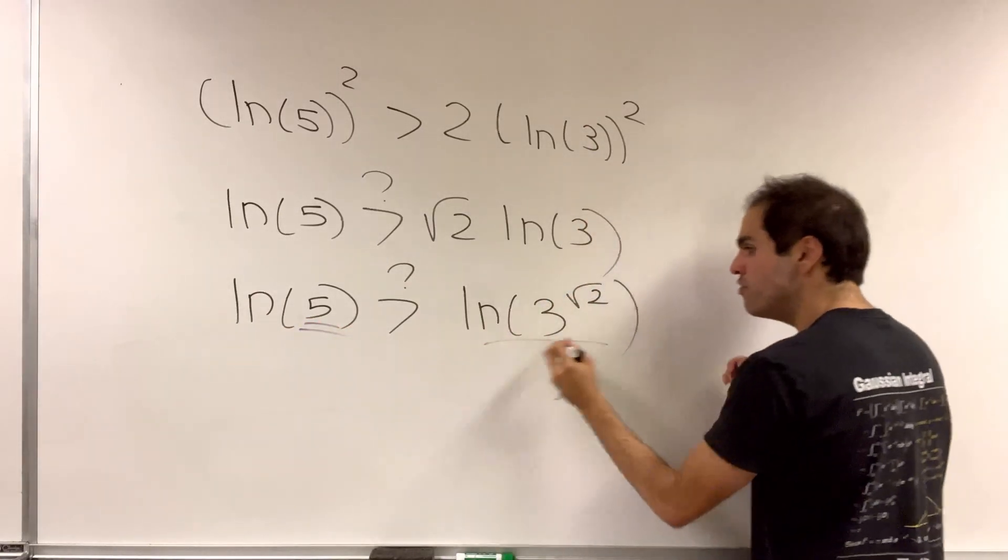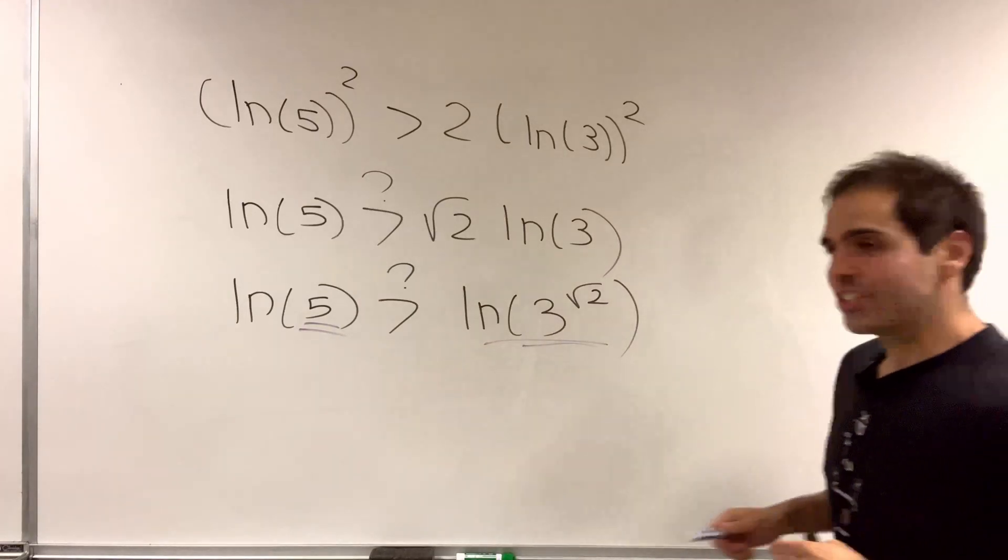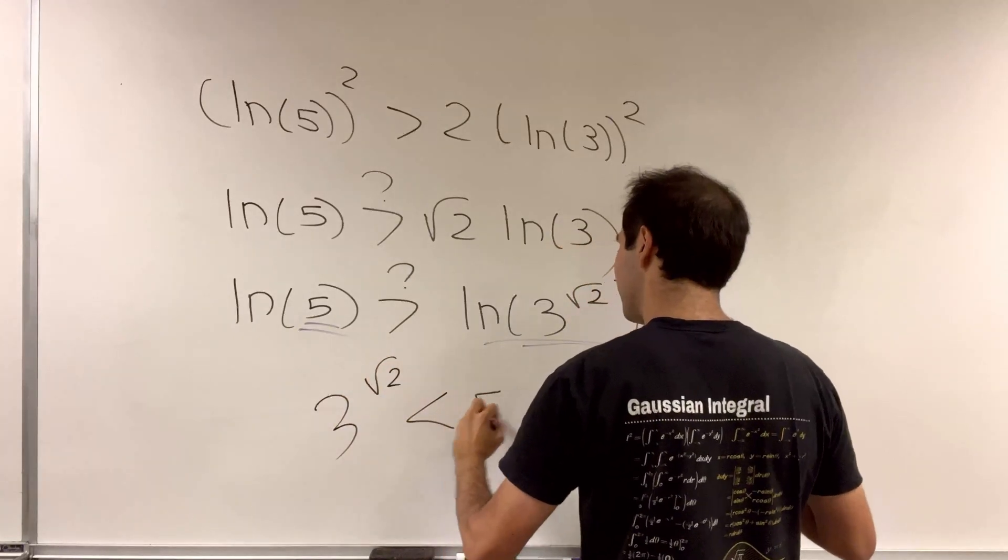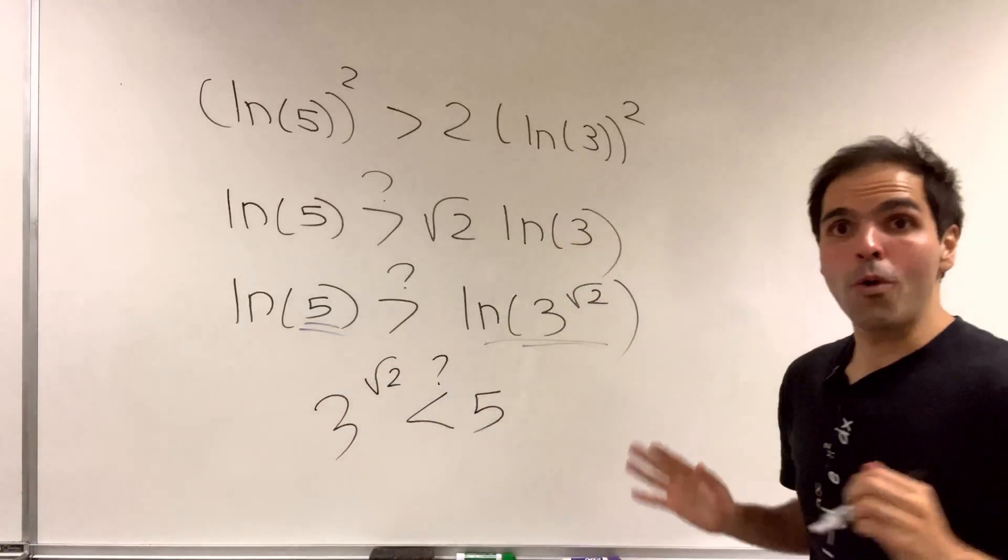And finally, removing the ln, the question boils down to: do we have 3 to the square root of 2 is less than 5 or not?